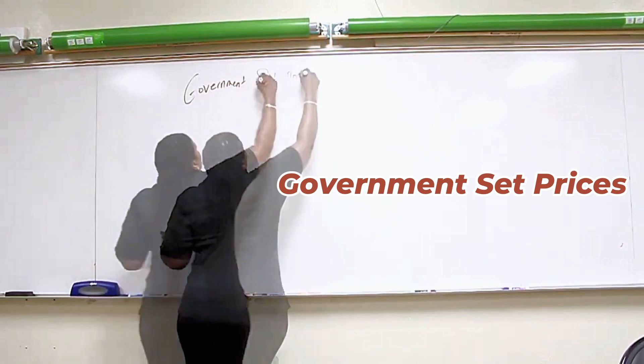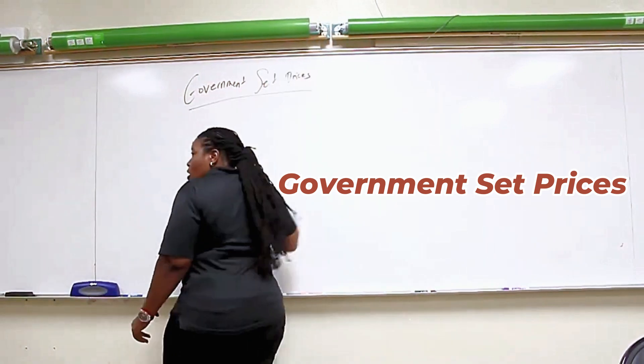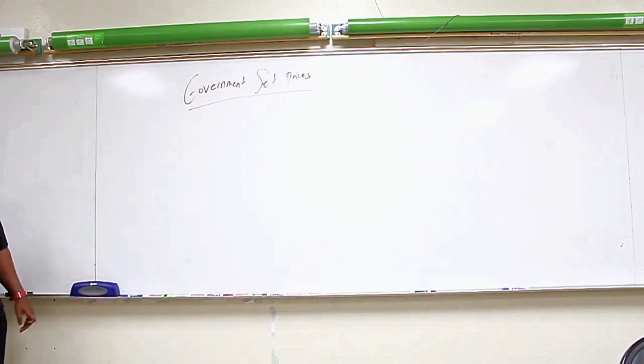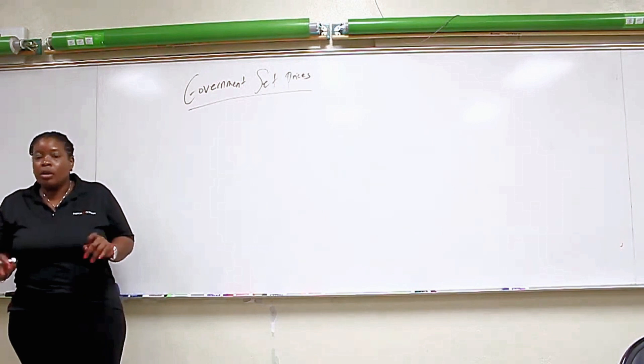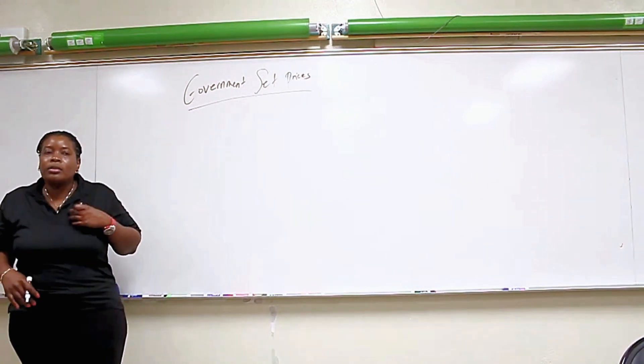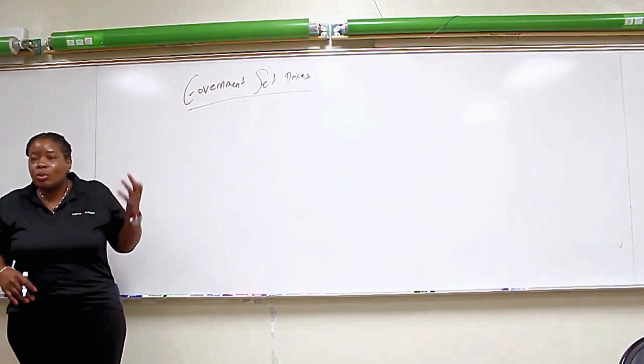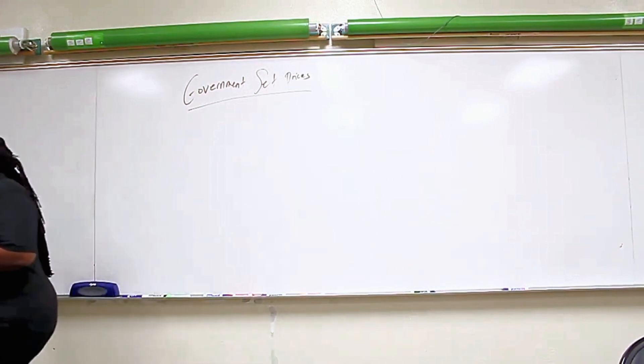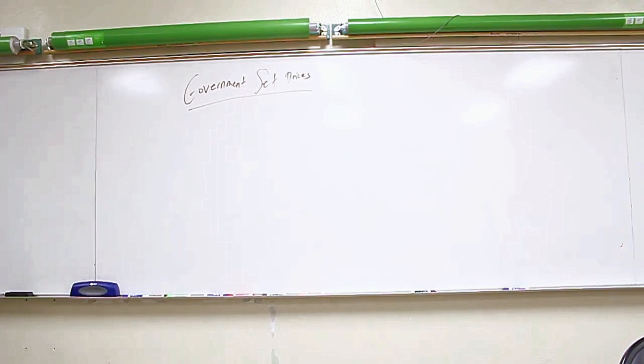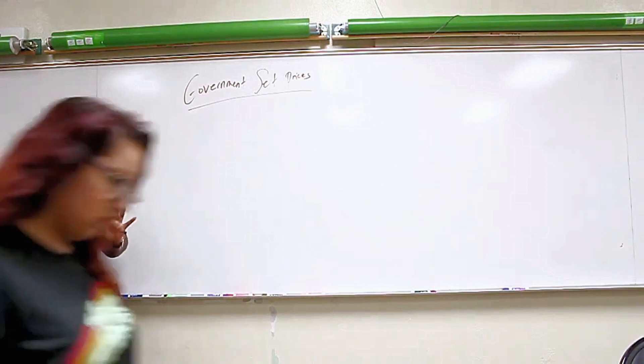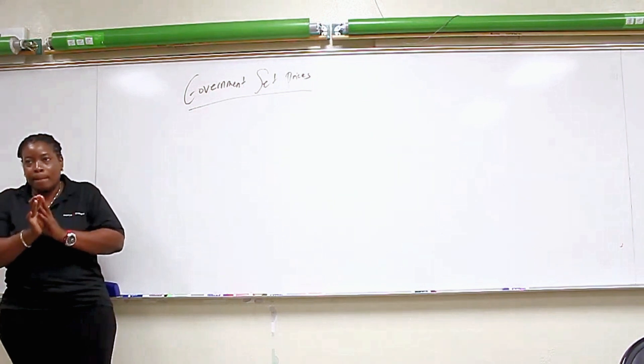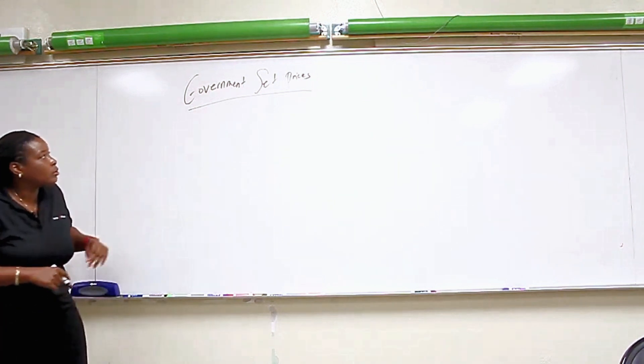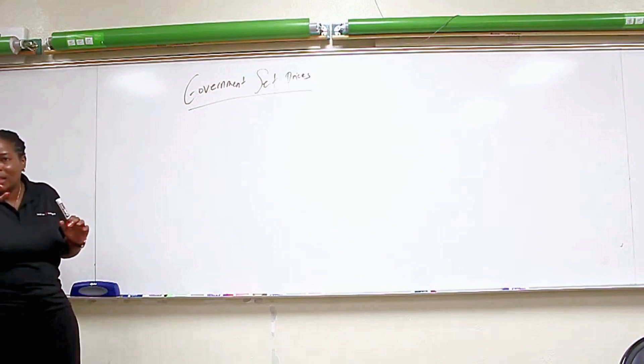Government set prices. Now here's the thing, as I said before, in my heart of hearts I think the government has noble intentions. They really are trying to help somebody. And what they do is they look at a particular situation and they determine that they're going to intervene and fix something. So here's how it works. There are pretty much two ways generally that they can intervene.